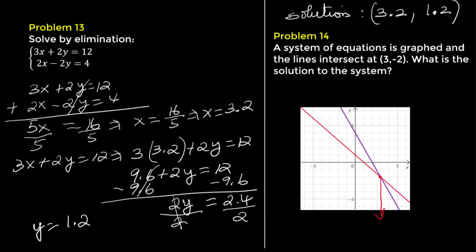Problem 14. Looking at the graph, we see these two lines intersect at 3 comma negative 2. The solution is 3 comma negative 2.